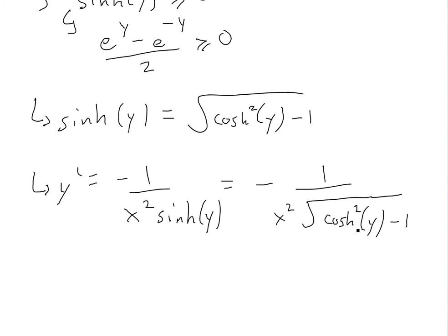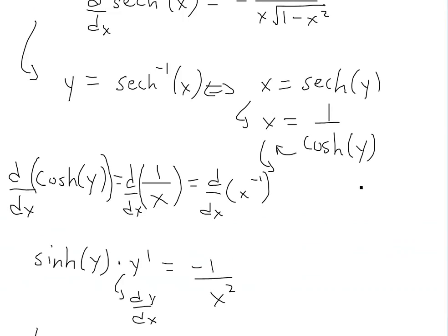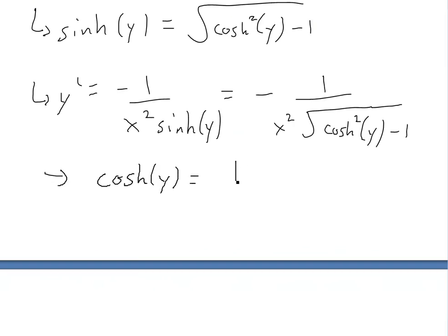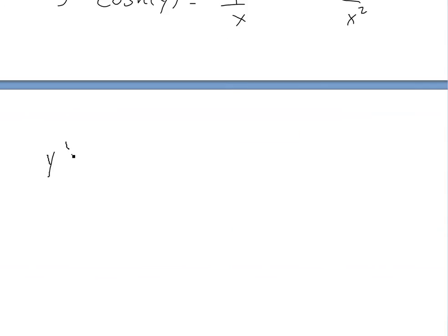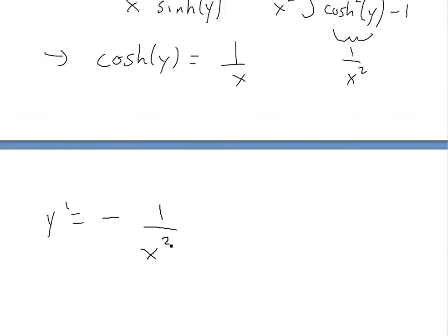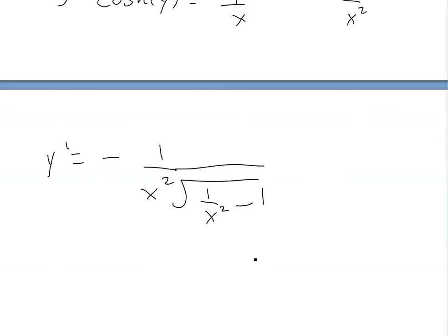Now we know what hyperbolic cosine of y is in terms of x. Scrolling back to the beginning of the proof, we established that hyperbolic cosine of y equals 1 divided by x. Squaring both sides, hyperbolic cosine squared of y equals 1 over x squared. Substituting this in, y prime equals negative 1 over x squared times the square root of 1 over x squared minus 1.